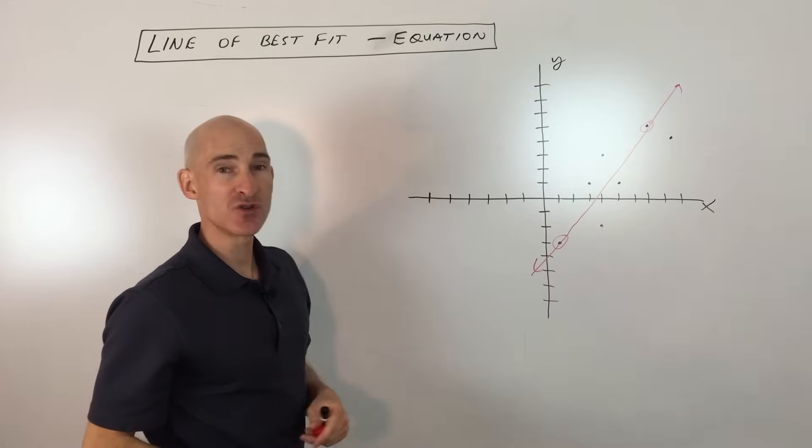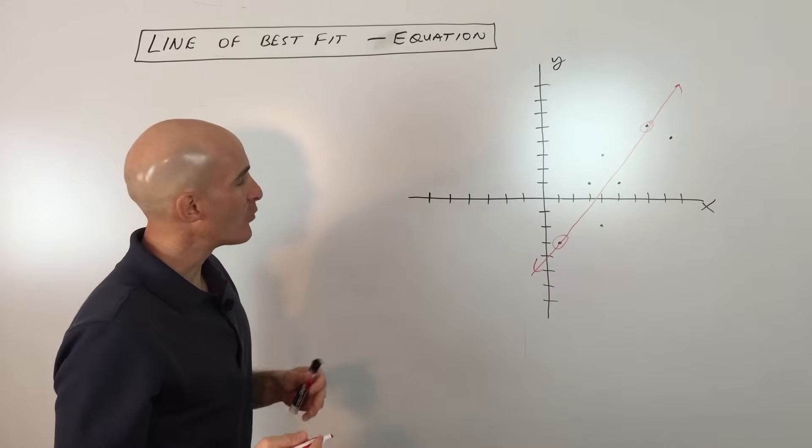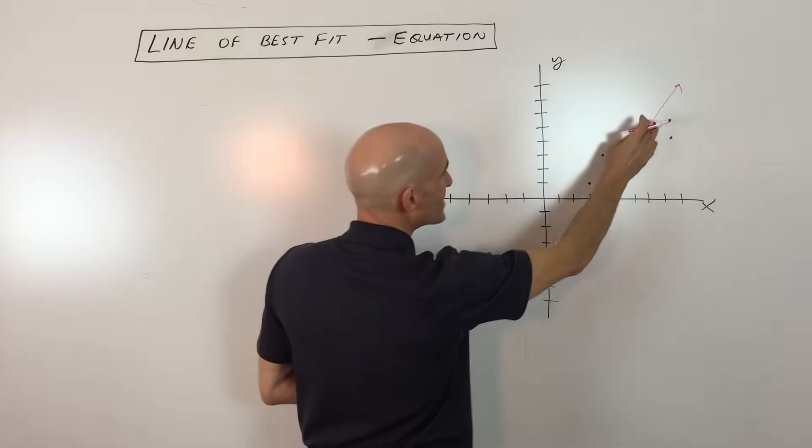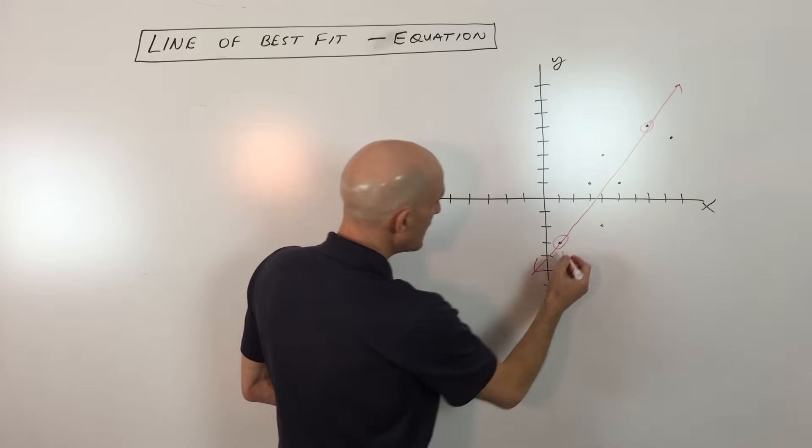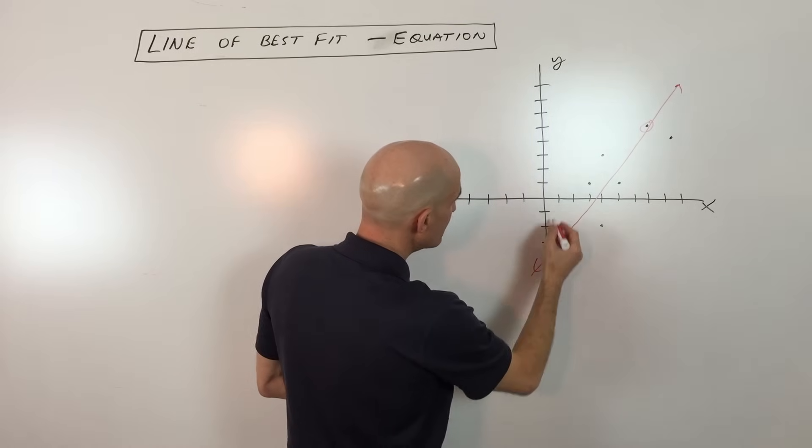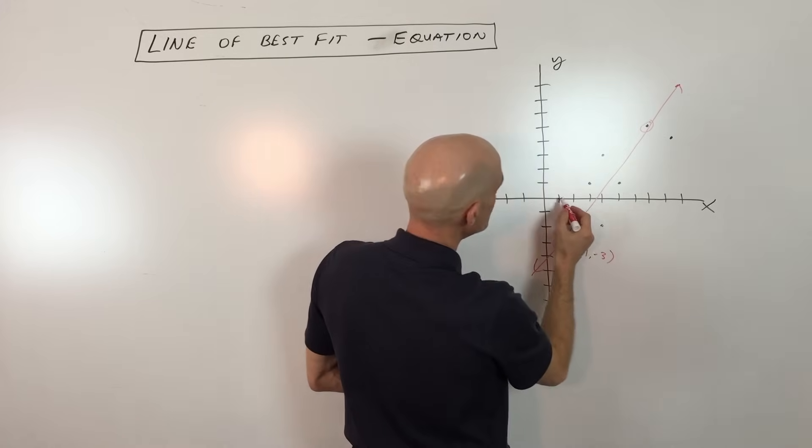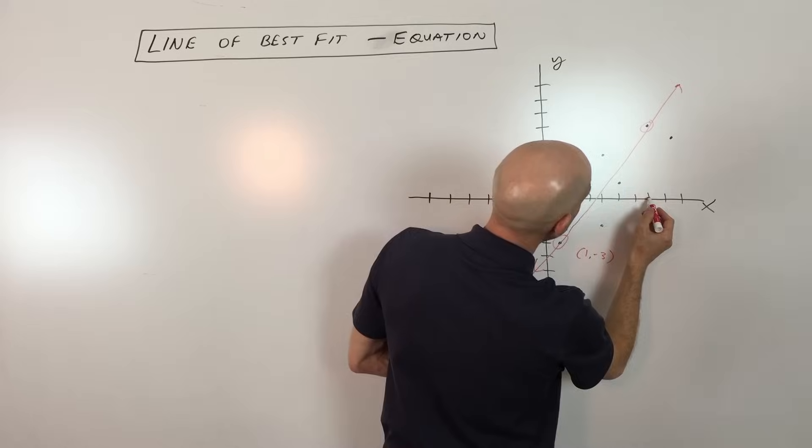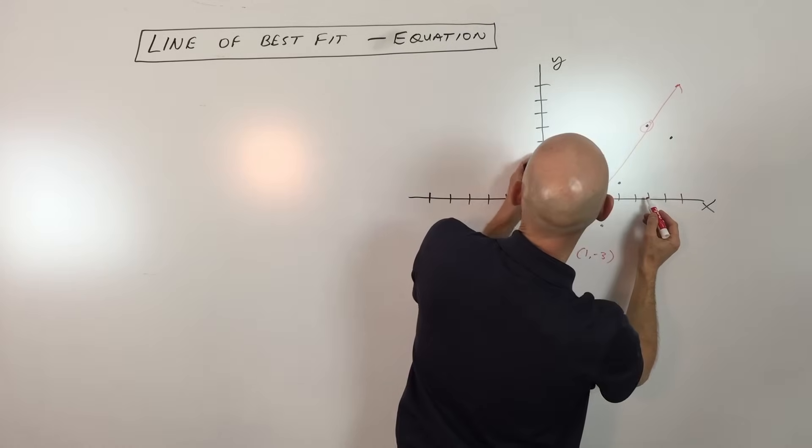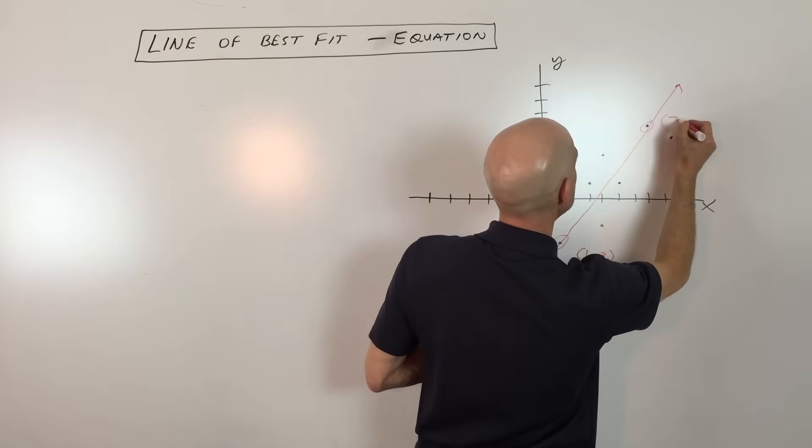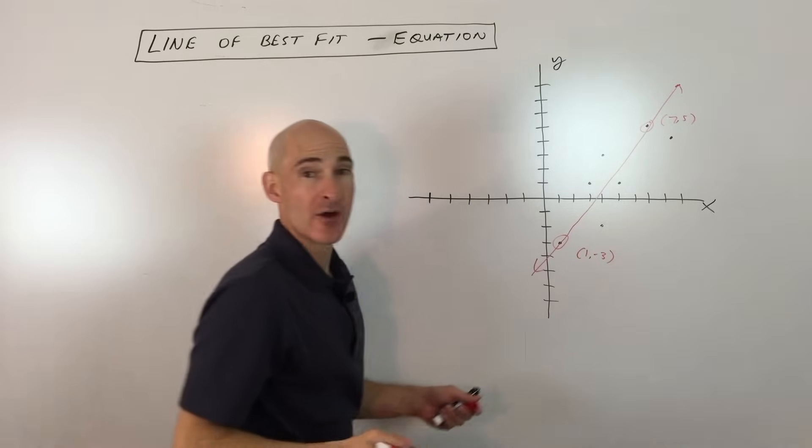Again like I said you don't want them all above or all below. So now what we're going to do is we're going to get into the equation and what we're going to do is we're going to look at these two points that actually lie on that line of best fit and let's write down their coordinates. So we have this point here which is one negative three and we also have this point here which looks like one two three four five six seven and one two three four five, so it looks like seven five.